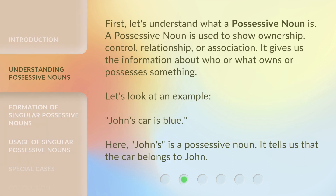First, let's understand what a possessive noun is. A possessive noun is used to show ownership, control, relationship, or association. It gives us information about who or what owns or possesses something. Let's look at an example: John's car is blue. Here, John's is a possessive noun — it tells us that the car belongs to John.